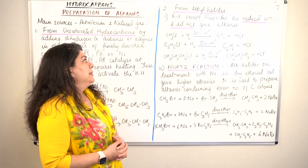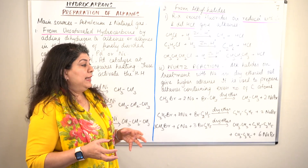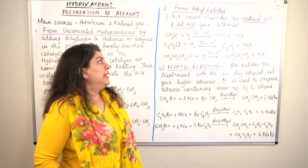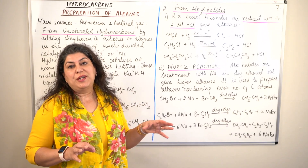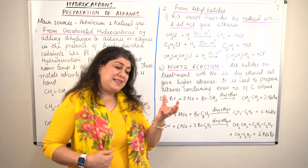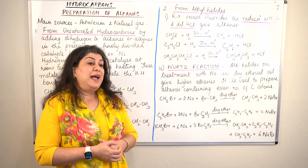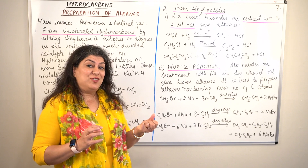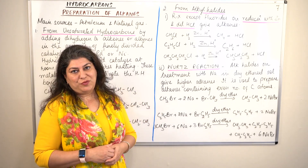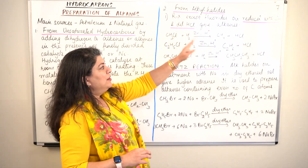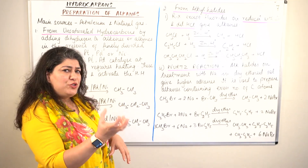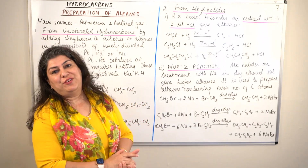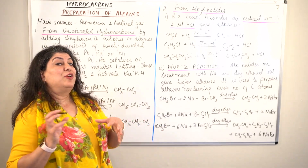Let us now come to the second source. You can also get alkanes from alkyl halides — except for fluorides. Alkyl fluorides do not undergo this reaction as easily because fluorine is the smallest and most electronegative atom in the entire periodic table, making its behavior very different from the other halogens. For the other halides, the halogen is larger and it is possible to break the C-X bond. You can remove the halogen and replace it with a hydrogen, and if you do that you will get the alkane instead of the alkyl halide.